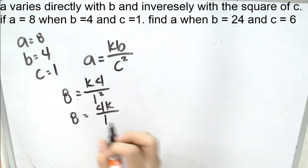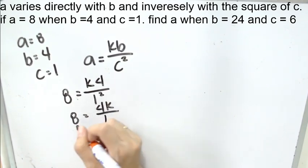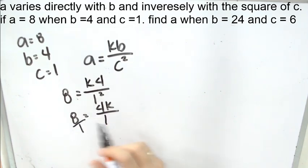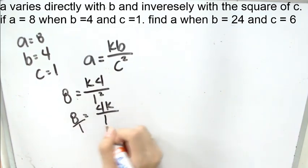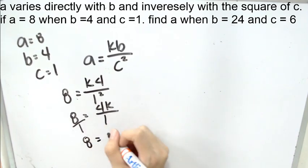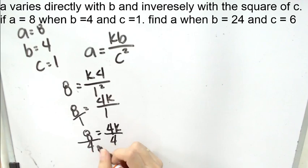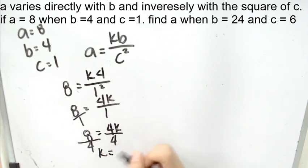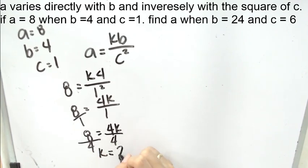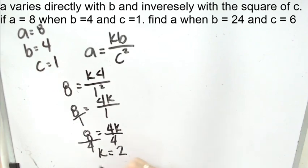For us to get the value of k, we can do the cross multiplication. This is 8 times 1, 8. And it must be equal to 4k. Divide both sides by 4. For us to get the value of k, we need to isolate k. So, k equals 8 divided by 4, and it is 2.